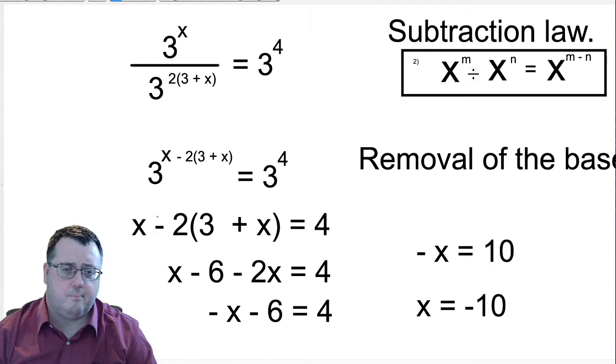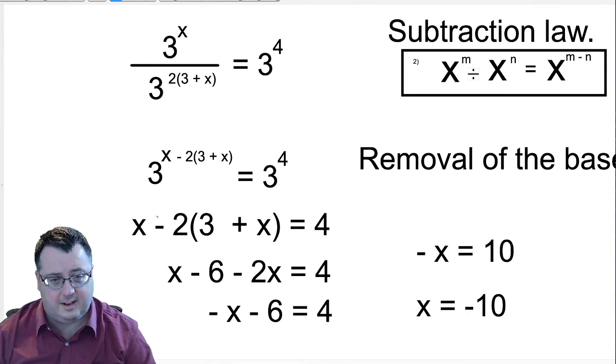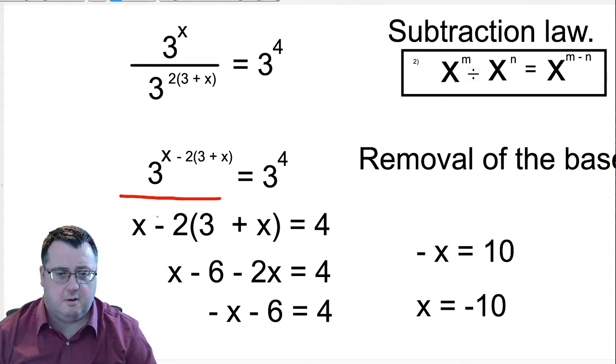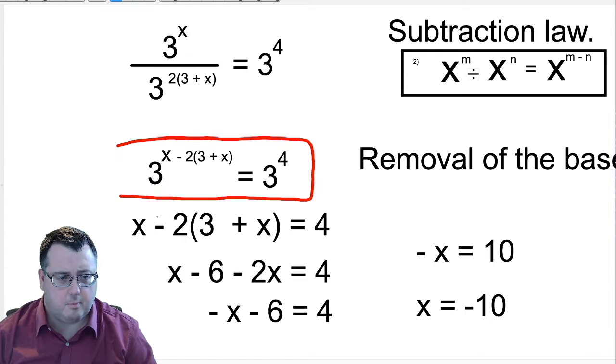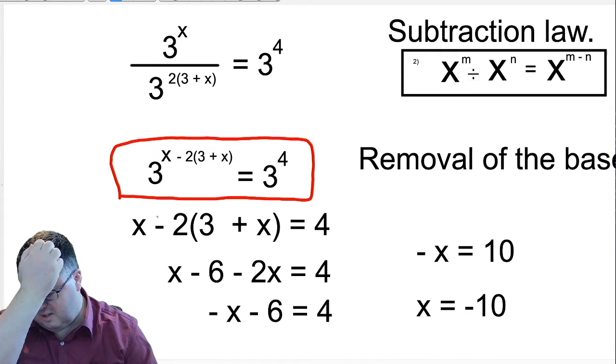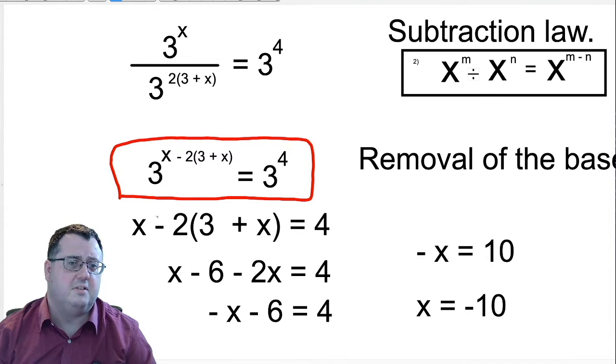This is the same step from the previous slide, but we're now going to use the subtraction law. So you can see that we're dividing powers of 3 here. 3 to the x divided by 3 to the 2 open brackets 3 plus x means that we can subtract those indices, giving us on a single line 3 to the x minus 2 open brackets 3 plus x close brackets equals 3 to the 4. So you can get down to this line just by using the powers, the index laws, which I've covered in the previous eight videos.